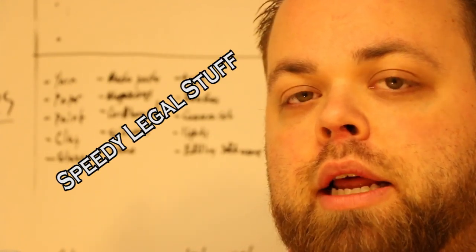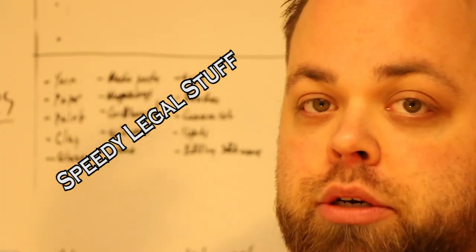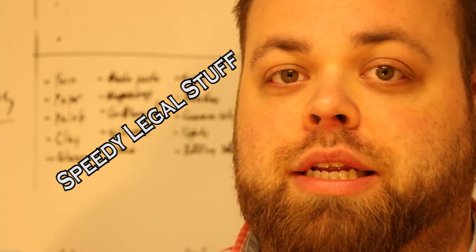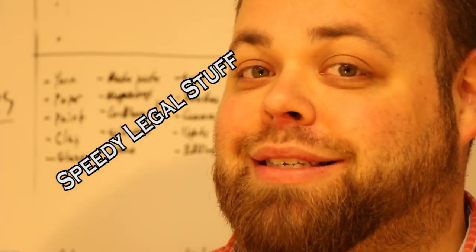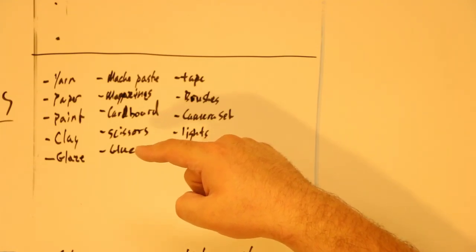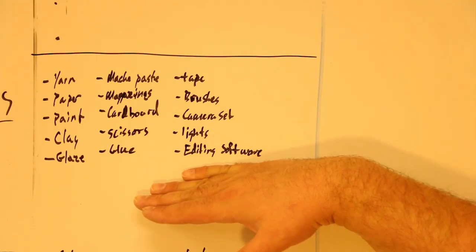A lot of principals won't tell you this, and most coordinators don't know it either: non-consumable items can be paid for under different funding terms. In the state of Georgia, art is listed as a core subject, which means we have access to Title 1 funds. If we're using non-consumable items, we can technically get access to Title 1 funds. Look through your list for non-consumable items that you can purchase and use for years to come.